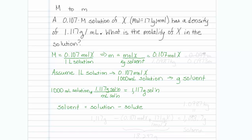Our solution mass is 1,117 grams. We can find our solute mass by taking our moles times our molar mass. That would be 0.107 moles of X and we'll multiply it by 171 grams of X per 1 mole of X.